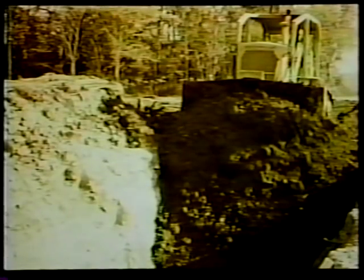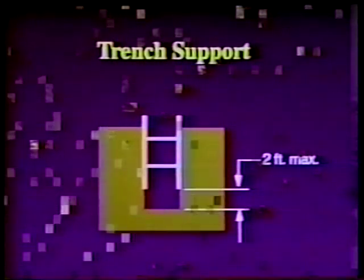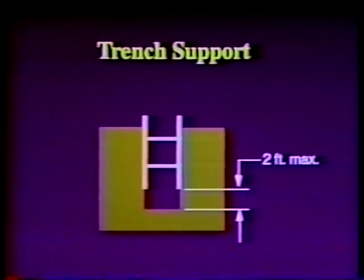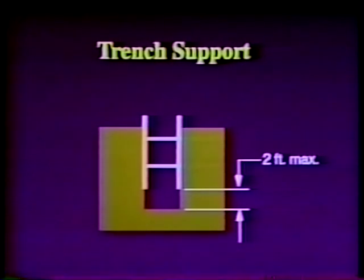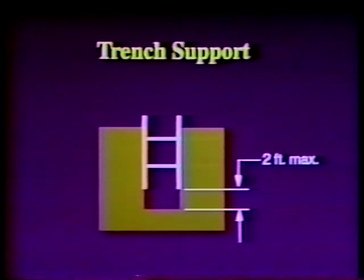Backfilling shall progress together with the removal of support systems. Material may be dug to a level no more than two feet below the bottom members of a support system if the system is designed to resist the forces calculated to the full depth of the trench, and there is no indication of soil loss from behind or below the bottom of the support system. This allowance for two free feet also applies to trench shields. Employees may not work on the faces of slopes or benches above other workers, unless the workers at the lower level are protected from the hazard of falling, rolling, or sliding material or equipment.